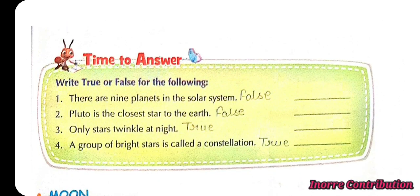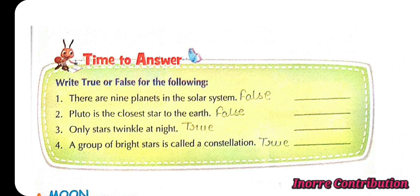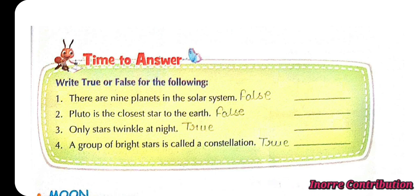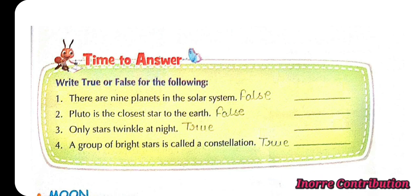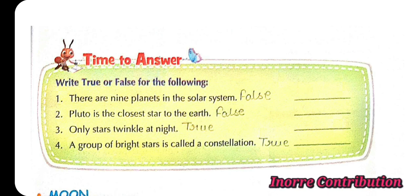Time to answer. Write true or false for the following. 1. There are 9 planets in the solar system. False. 2. Pluto is the closest star to the Earth. False. 3. Only stars twinkle at night. True. 4. A group of bright stars is called a constellation. True.